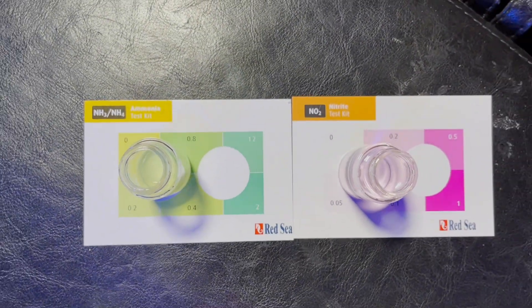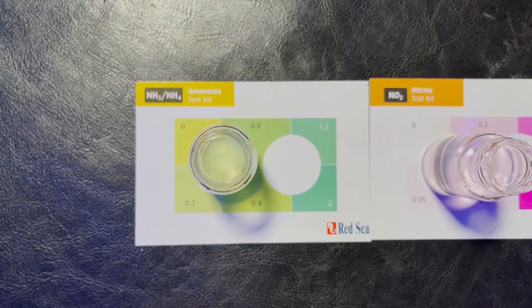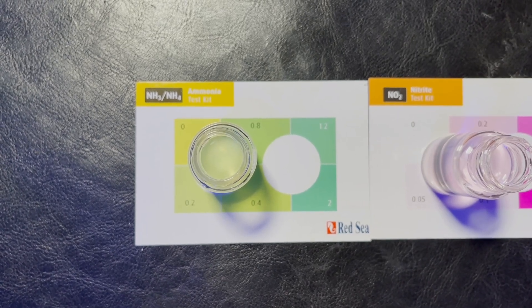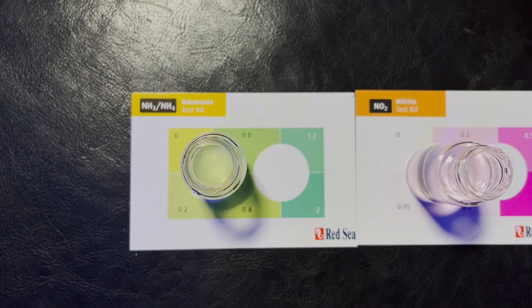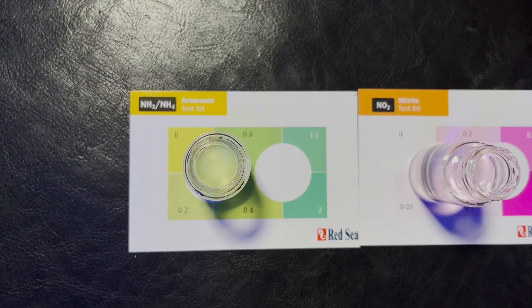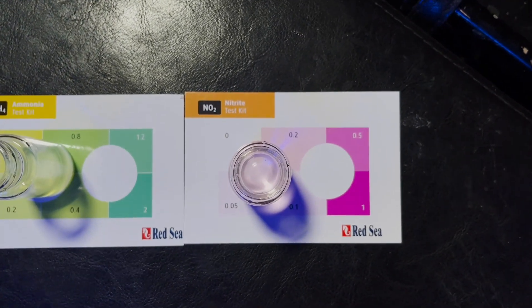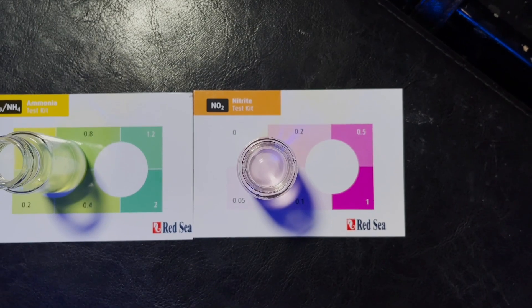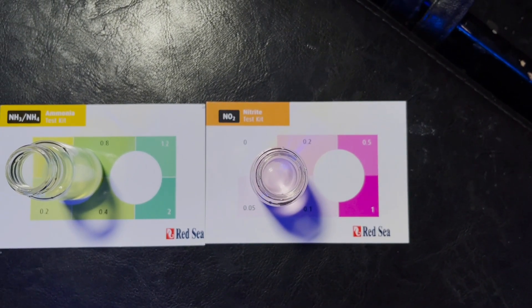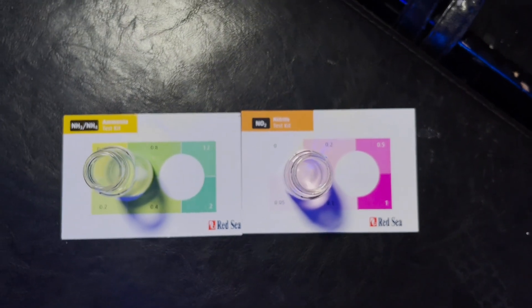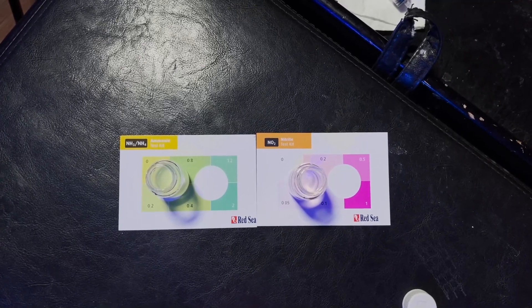All right, guys, fast forward three more days. It is now November 7th and we have a bit more ammonia, but now we are actually testing and have nitrite on our charts. Do you guys know what this means? This means that the BioCube is on its way to being cycled. This is great. This is awesome. So one thing you don't want to go overboard on ammonia because you don't want to go overboard on nitrite.